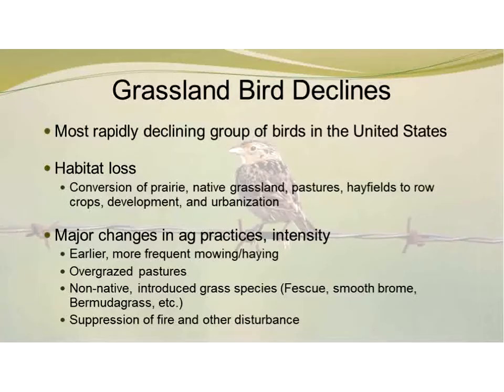Grassland birds are actually the most rapidly declining group of birds in the United States. Population declines are largely attributed to habitat loss — the conversion of prairie habitats, native grasslands, pastures and hay fields to row crops. It's not just conversion to row crops or agriculture, but also urbanization, and the intensity of agricultural practices has increased over time.